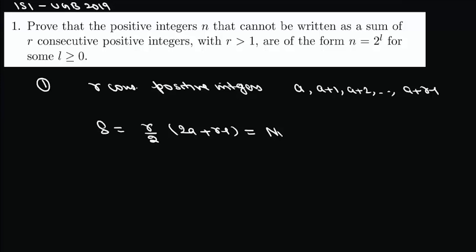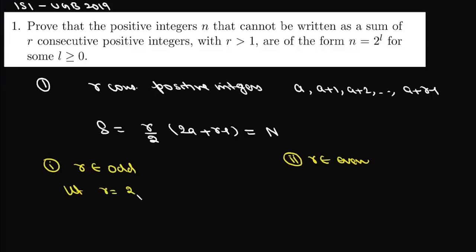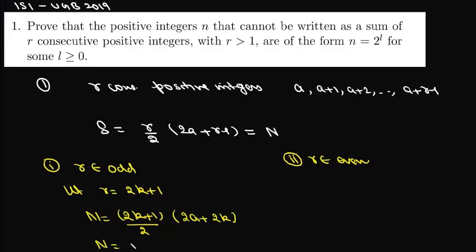Now we will consider two cases. Case 1: when r is odd. Let r be of the form 2k plus 1. Then we can write n as (2k plus 1) divided by 2 times (2a plus 2k), which simplifies to n equals (2k plus 1) times (a plus k). Clearly r greater than 1 means 2k plus 1 is greater than 1.